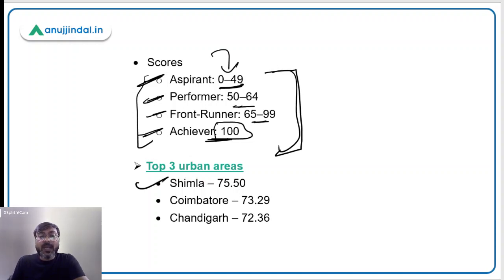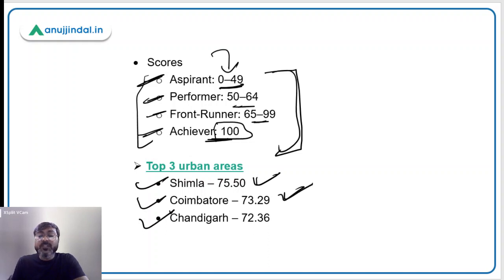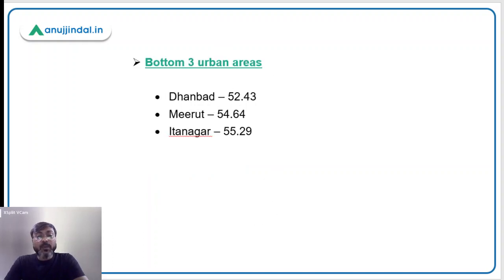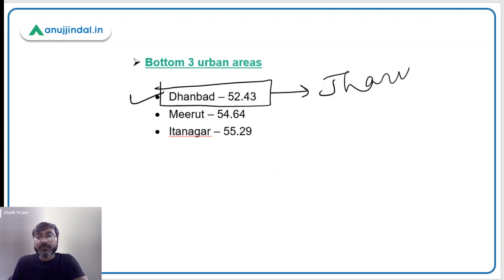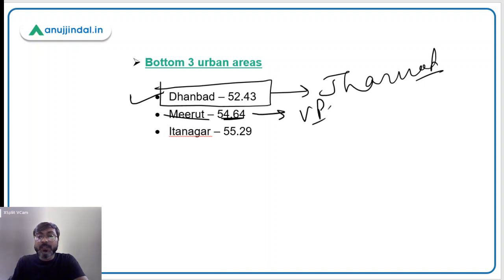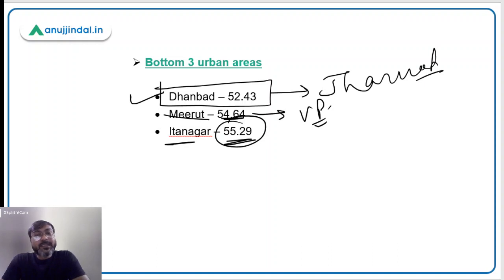The top three urban areas are: number one Shimla with a score of 75.50, number two Coimbatore with a score of 73.29, and number three Chandigarh with a score of 72.36. For the bottom three, Dhanbad is at the bottom with a score of 52.53; Dhanbad is in Jharkhand. Next is Meerut with a score of 54.64, which is in UP, and Itanagar at 55.29.